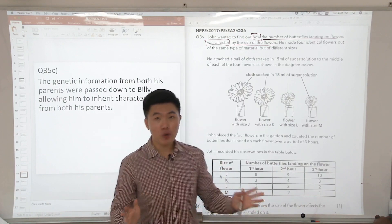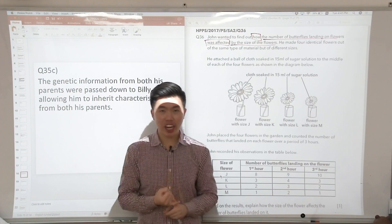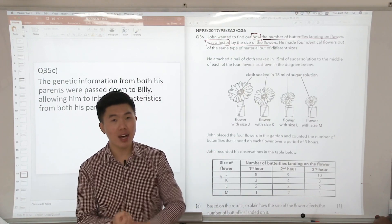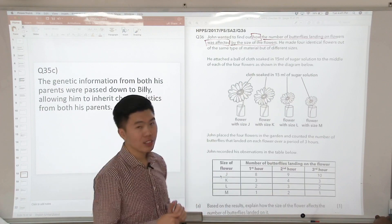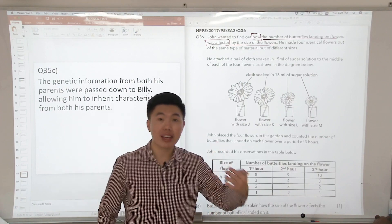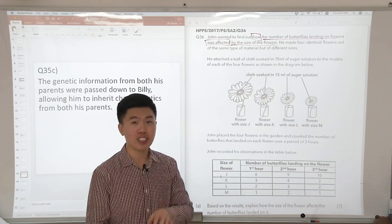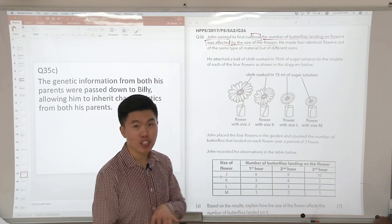In any experiment, there are two variables. One is called the change variable and the other is the measured variable. Now which one do you think is the change variable? The change variable is whatever that we are testing. The measured variable is essentially our results. Which one is the change variable?